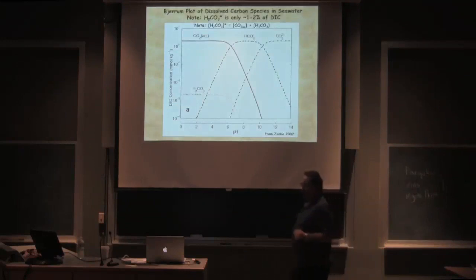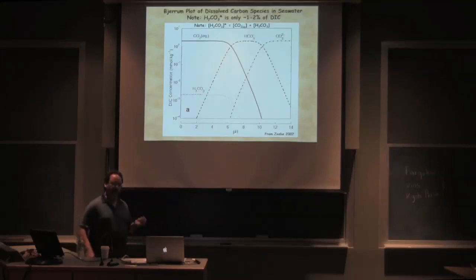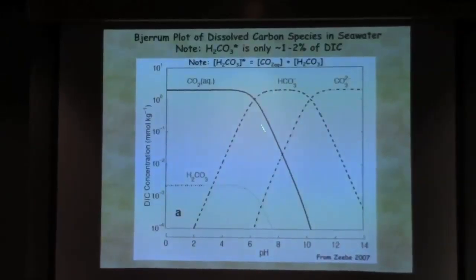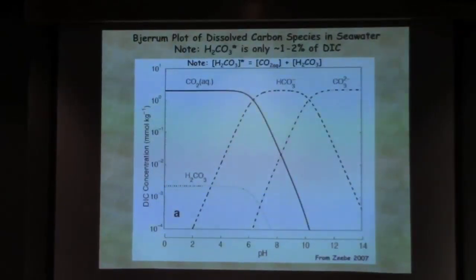Why isn't it happy? Because of this—this is what's called a Bjerrum plot. You can do this with basic carbon equilibrium; it's a very simple Excel spreadsheet plot to make. What you're looking at is the relative proportions of CO2 aqueous carbonic acid—usually these two are combined—bicarbonate, and carbonate as a function of pH.